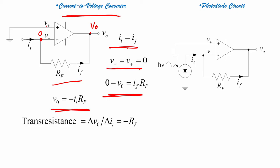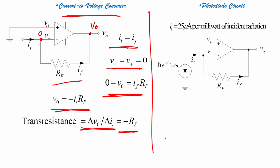Trans-resistance is defined as delta Vo divided by delta Ii, which equals minus Rf. Now let us see this particular circuit. I will not teach what trans-conductance or trans-resistance is in detail — you have to understand how it is defined and how we write delta Vo divided by delta Ii.